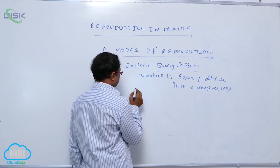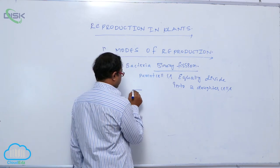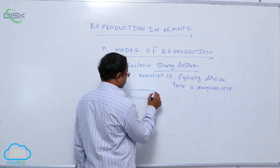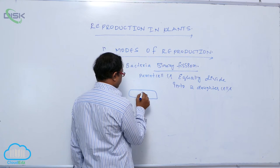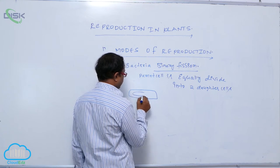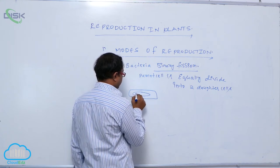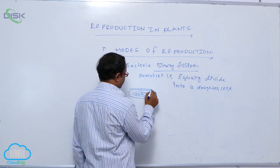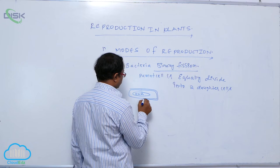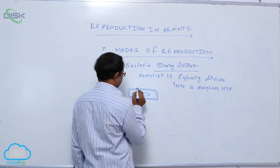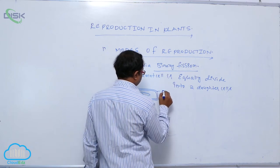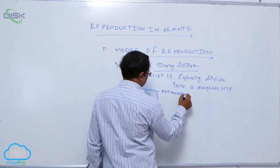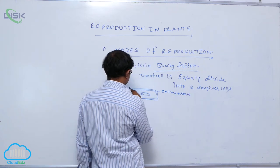What are the steps? First one, it is a parental cell. This parent cell has DNA. It is known as the cell membrane. Cell membrane is covered by that cell wall.